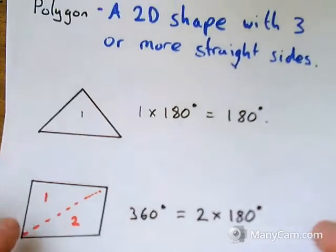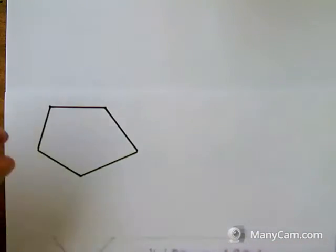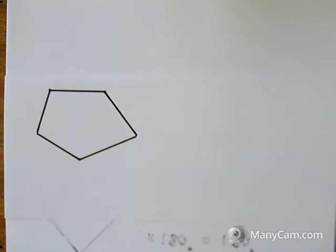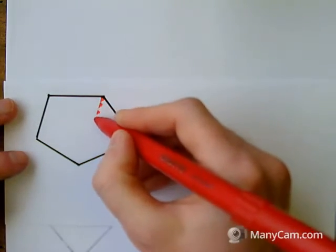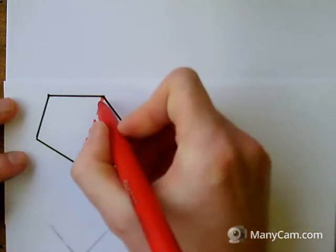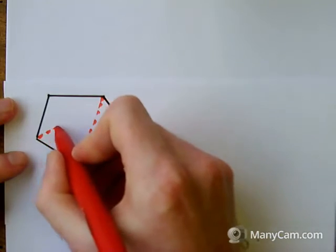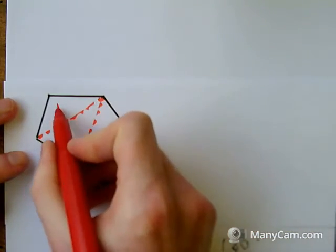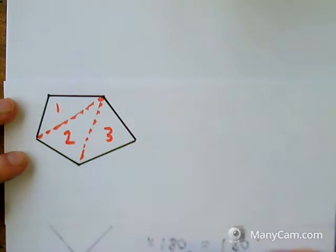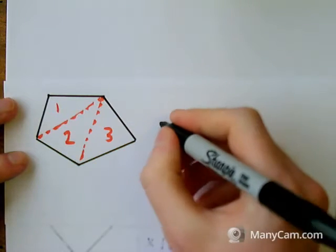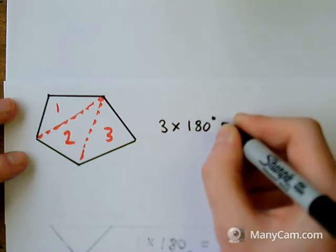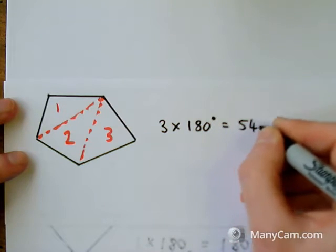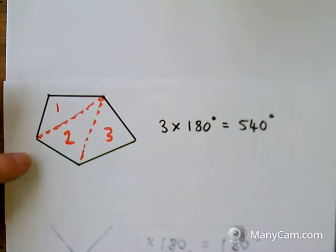If I look at a pentagon, a five-sided shape, and split it into triangles again — coming from this corner down here and then across — I've got one, two, three triangles this time. So three lots of 180 degrees gives me 540 degrees in a five-sided shape.